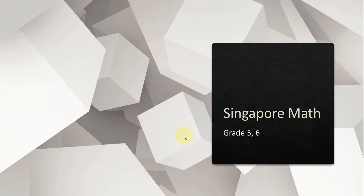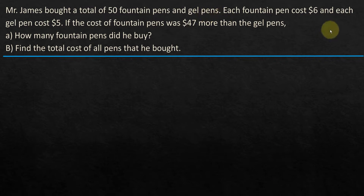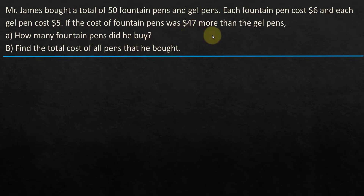Hi everyone. Let's dive straight into the problem today. Mr. James bought a total of 50 fountain pens and gel pens. Each fountain pen cost $6 and each gel pen cost $5. If the cost of the fountain pens was $47 more than the gel pens, how many fountain pens did he buy?